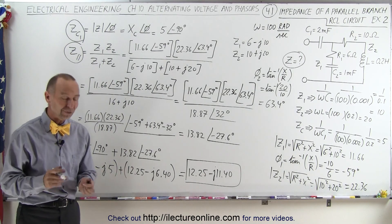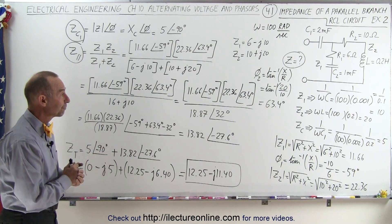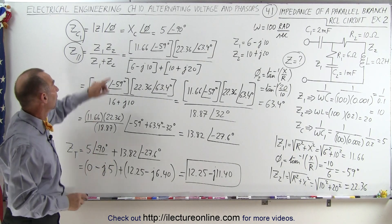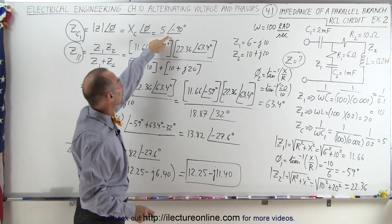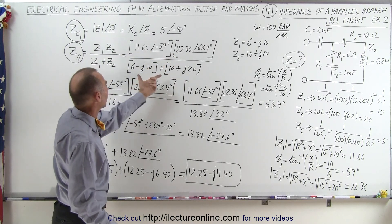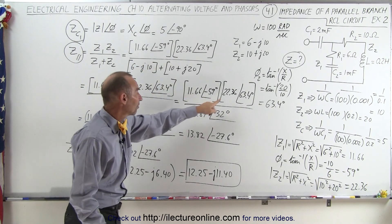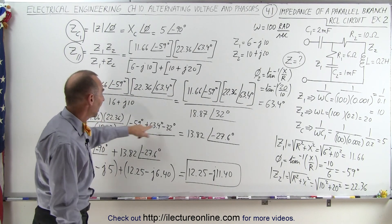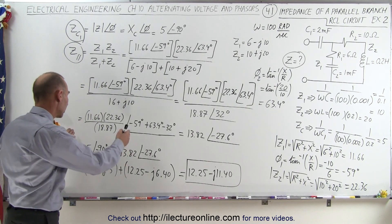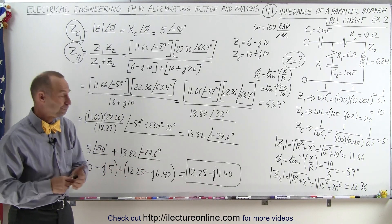This is the exact same result as in the previous video. It's up to you to determine which method you prefer. This method is relatively easy because finding the magnitude and phase angle is straightforward. It's better to add impedances in rectangular form first, but once you have them in polar form, multiplying and dividing is simple. At the end, convert back to rectangular form to add the final components together.